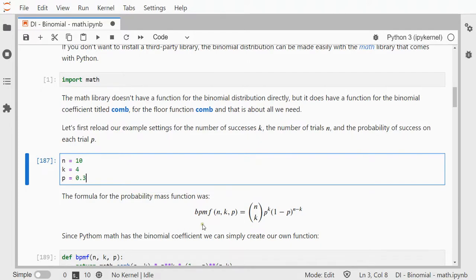Now the binomial probability mass function is this formula over here. As you can see this part is actually the binomial coefficient, so for that we can use simply that comb function from math and this is just the probability raised to a certain power times 1 minus that probability.